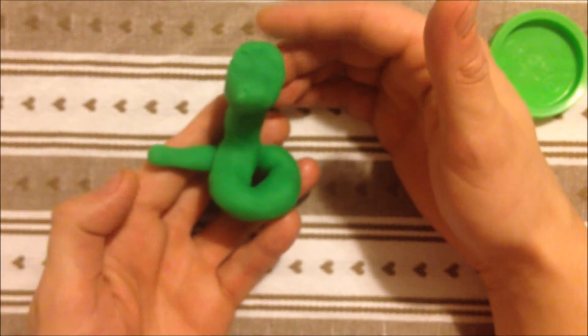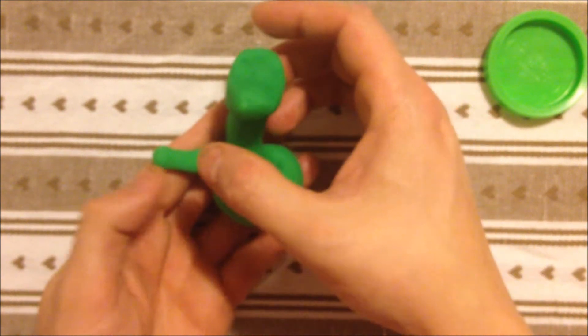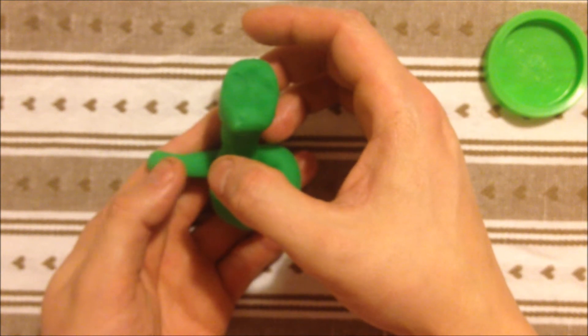Now we're going to put some detail. We're going to do eyes, a tongue and a little rattle for his tail.